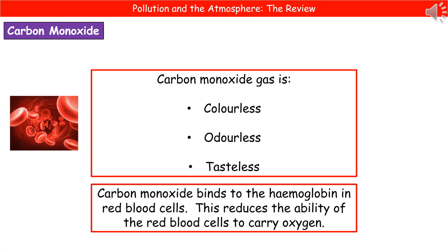The big problem with carbon monoxide is that it's colourless, odourless, and tasteless, so it's known as the silent killer. When you breathe in carbon monoxide, it binds to the haemoglobin in your red blood cells. When carbon monoxide is bound to the haemoglobin, it can't then take oxygen, which reduces your ability to carry oxygen around your body. If you've inhaled enough carbon monoxide, you are going to suffocate.